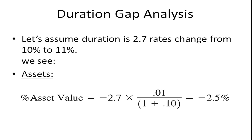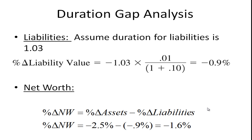Let's look at an example. Suppose the duration of assets is 2.7 and rates change from 10% to 11%. The percentage change in asset value is minus 2.7 — which is minus the duration — times the change in the interest rate, which is 1%, divided by 1 plus the interest rate. Using the original interest rate of 10%, we get minus 2.5%.